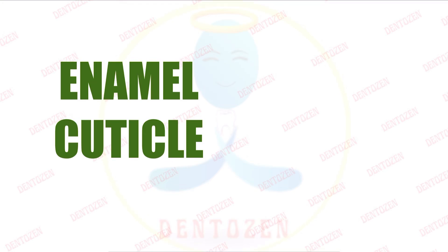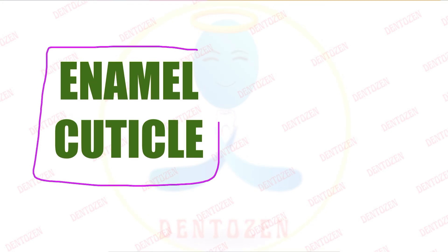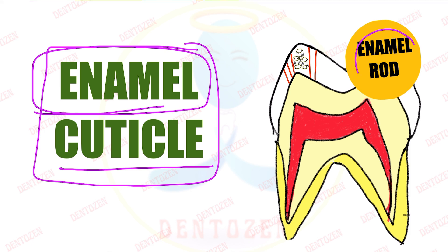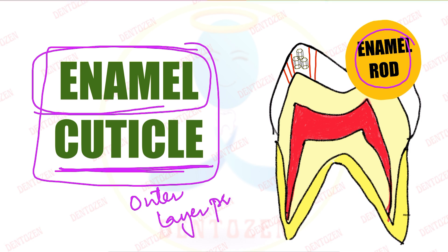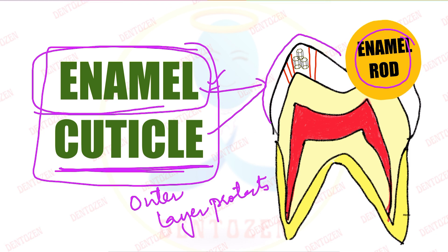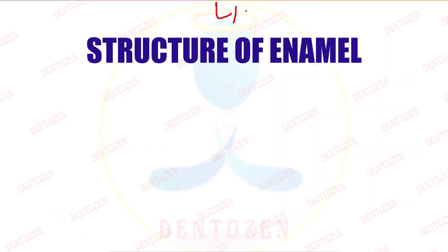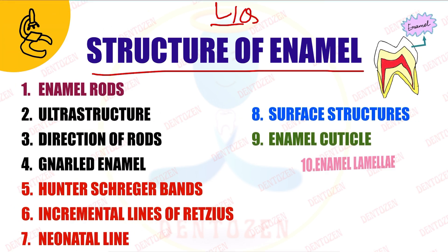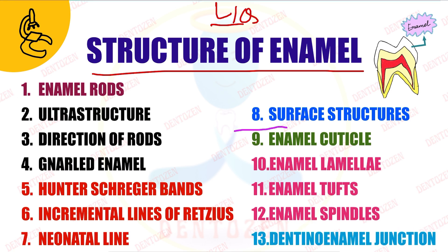Hello everyone, welcome back to Dentazen. Today we have a new video on enamel cuticle, continuing our lectures on the topic of enamel. Enamel is made up of enamel rods. A cuticle means an outer layer which protects a surface, so enamel cuticle is a layer present over the enamel that protects it. In today's video we will discuss enamel cuticle in detail.